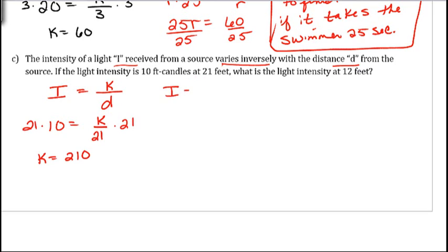So our equation I is equal to 210 divided by d. And now it says what is the light intensity at 12 feet? So replace the d with 12. So we get I is equal to 210 divided by 12. And 210 divided by 12 gives us 17.5.